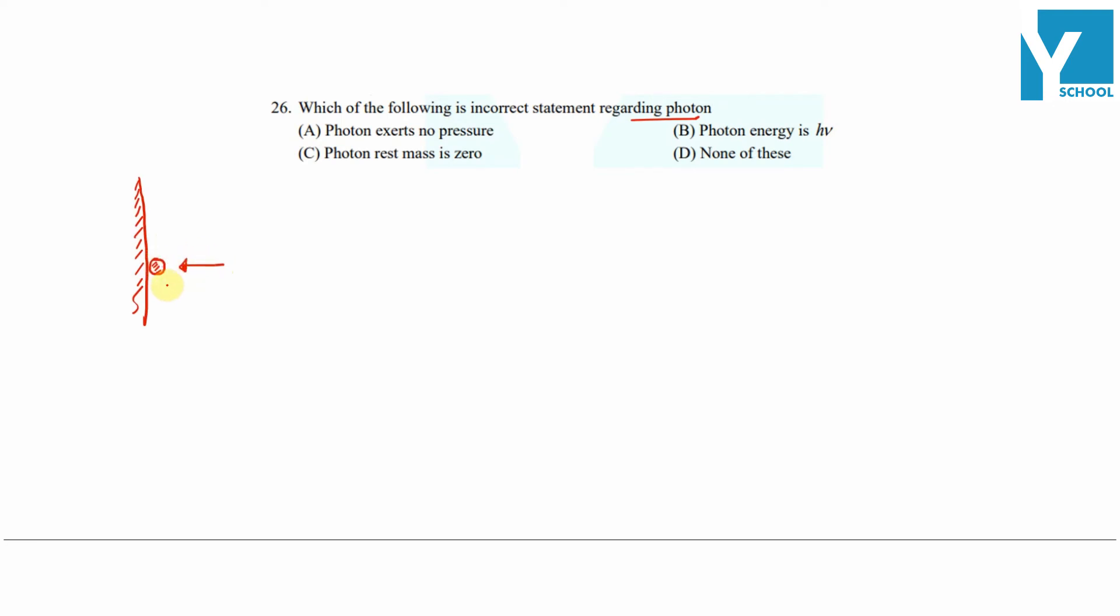This photon is having momentum E by C and then it rebounds with the same momentum. If collision is perfectly elastic, again momentum is E by C. So initial momentum is in this direction, final momentum is in this direction here.